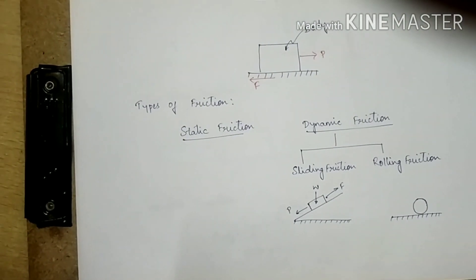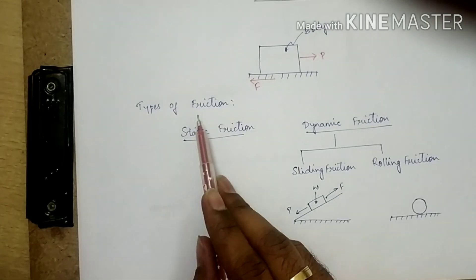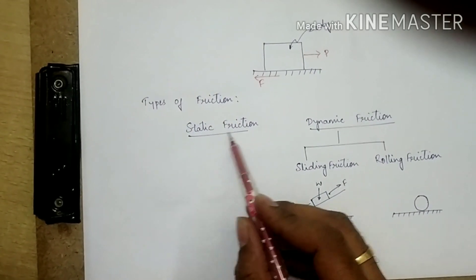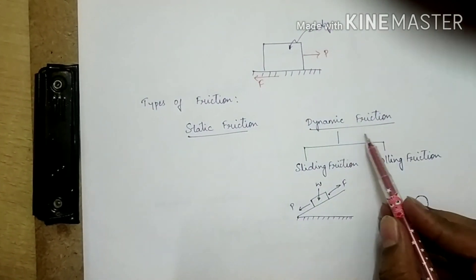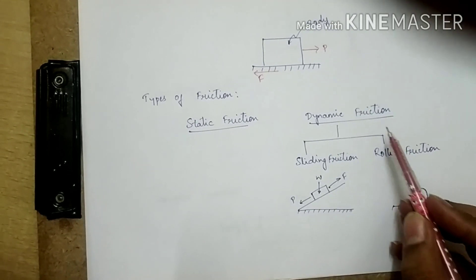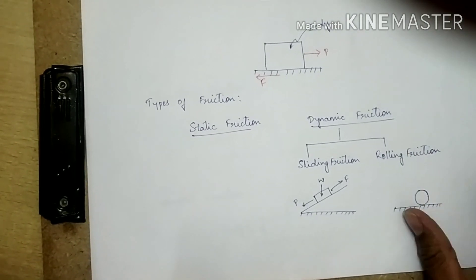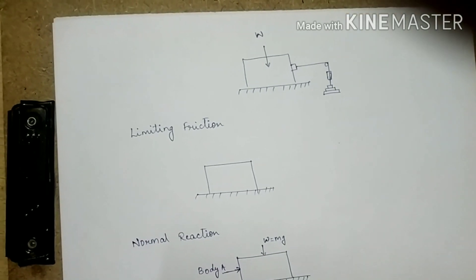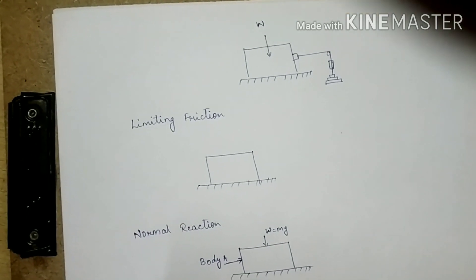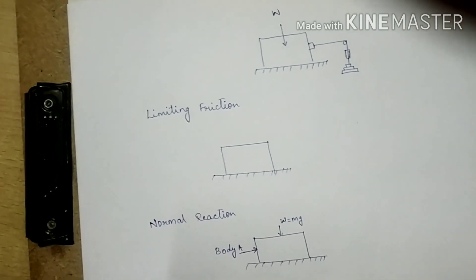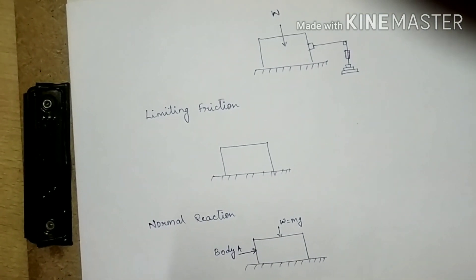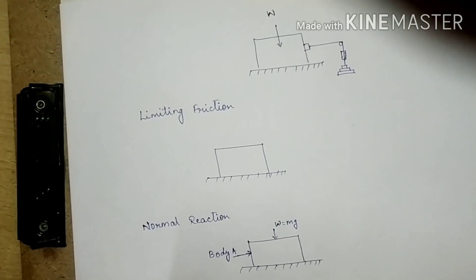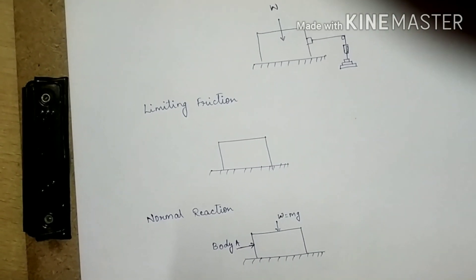Now let us look into types of friction. Friction is basically divided into static friction and dynamic friction. Static friction is the friction acting on a body when it is at rest, or the friction which exists before the body tends to move on the surface.